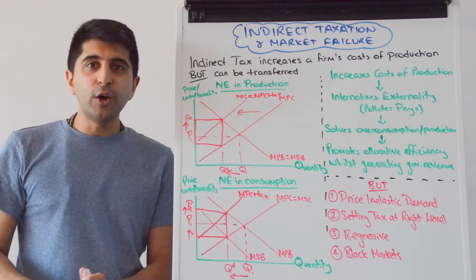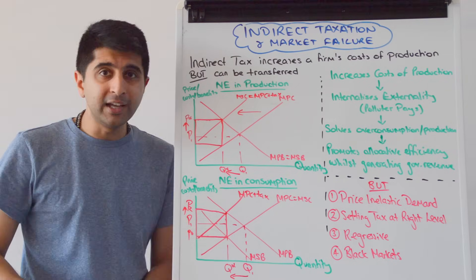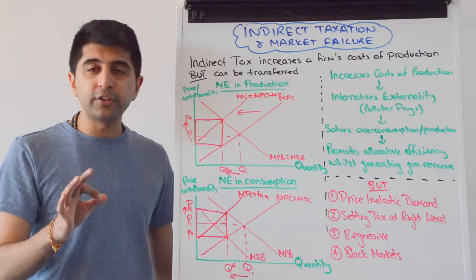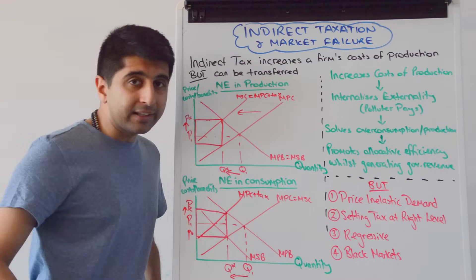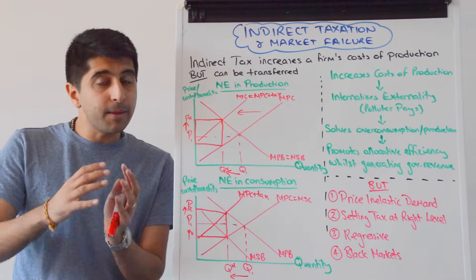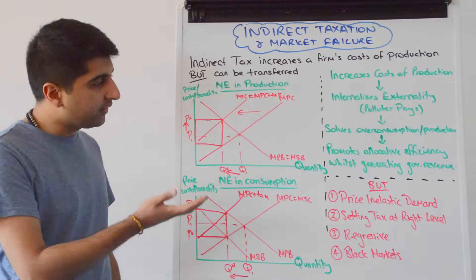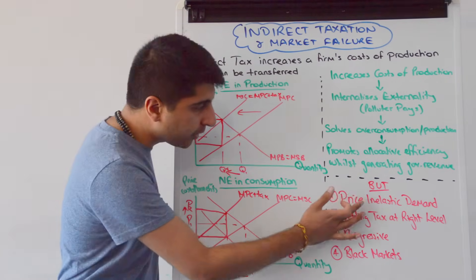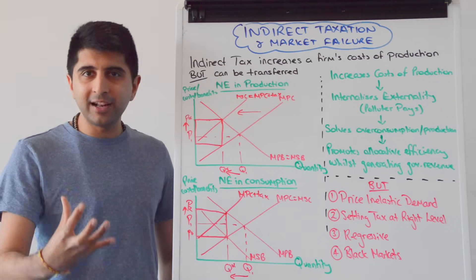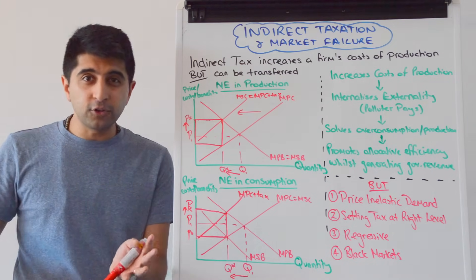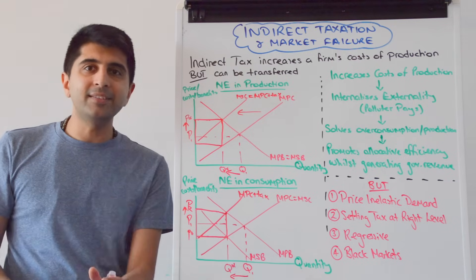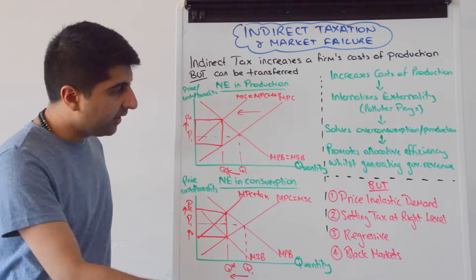But there are major issues with using indirect taxation to solve market failure. There are many assumptions that will not necessarily hold in the real world. The biggest one is that there might be price inelastic demand. For an indirect tax to work in reducing quantity to the social optimum, demand needs to be more price elastic — there needs to be responsiveness to the increase in price. But for goods like cigarettes, alcohol, and sugar, demand is price inelastic due to addiction and very few substitutes. Therefore, even though price goes up, quantity will decrease proportionally less than the increase in price — not enough to solve the market failure.